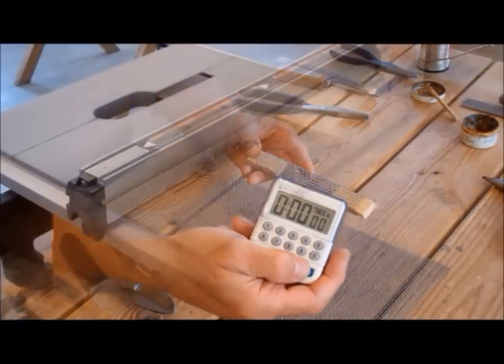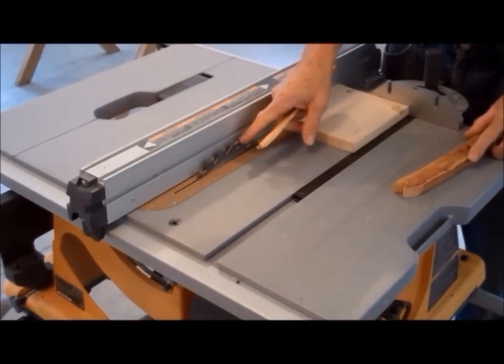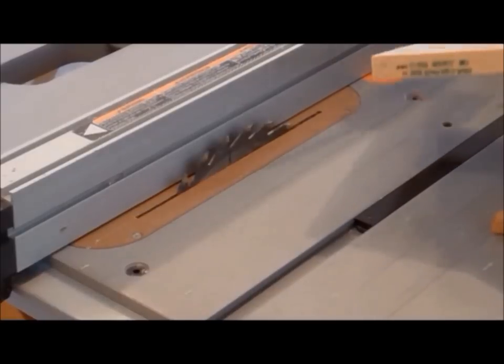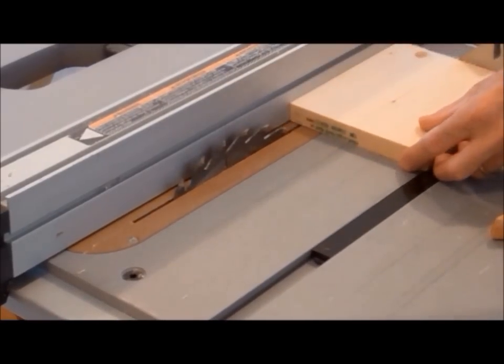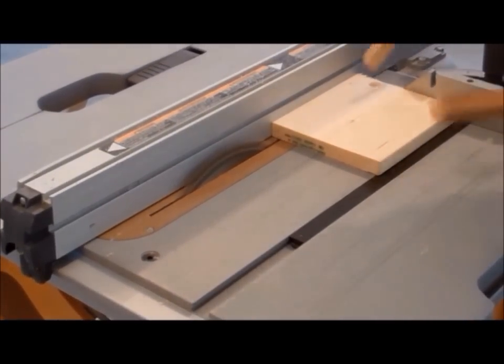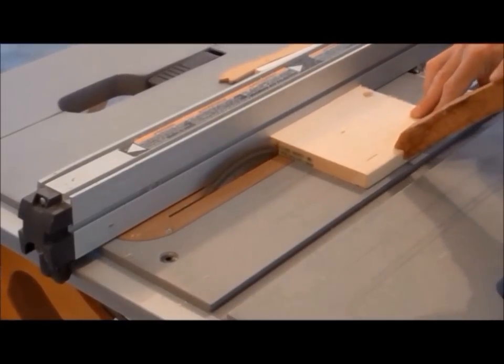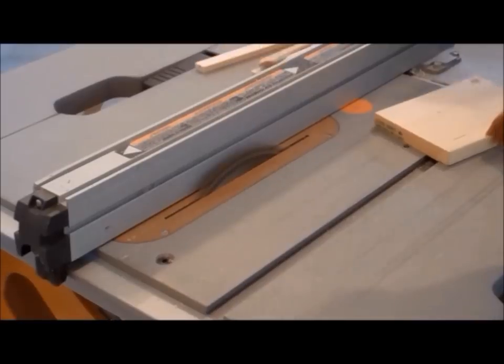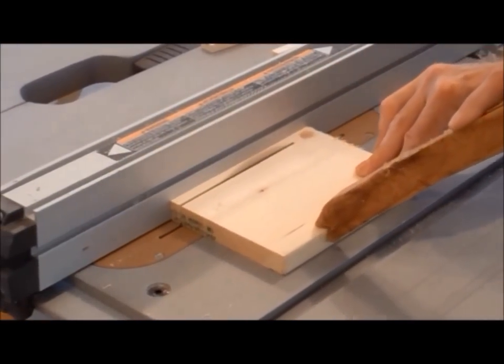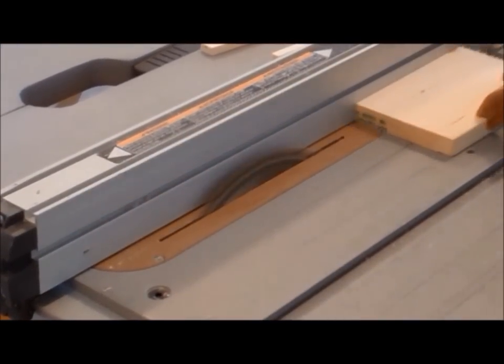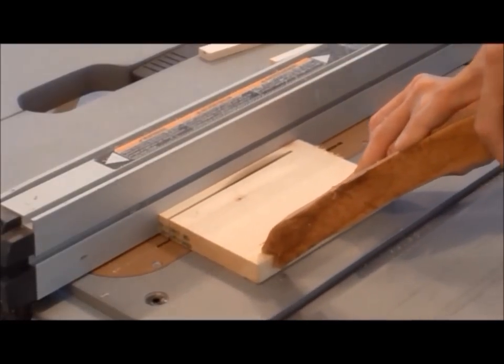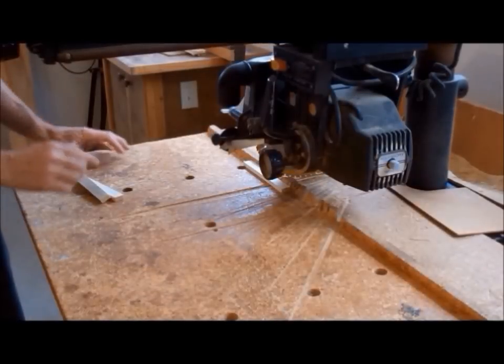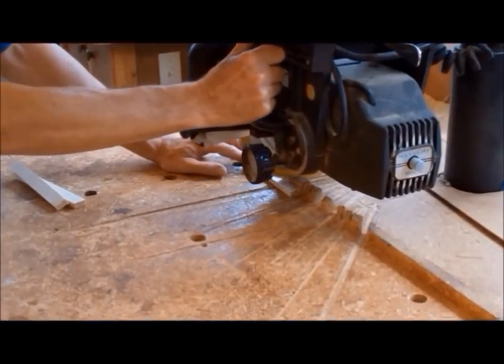So let's get started. The first thing we want to do is to make the end plugs. On the table saw, I set the fence three-eighths of an inch to the inside of the blade. I'm using a scrap piece of one by eight. We need a couple of two-inch pieces from one of the blanks to use as the end plug.